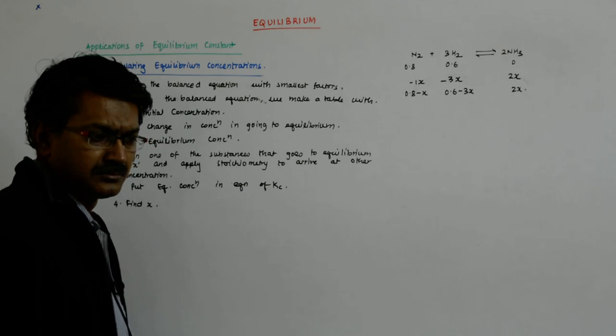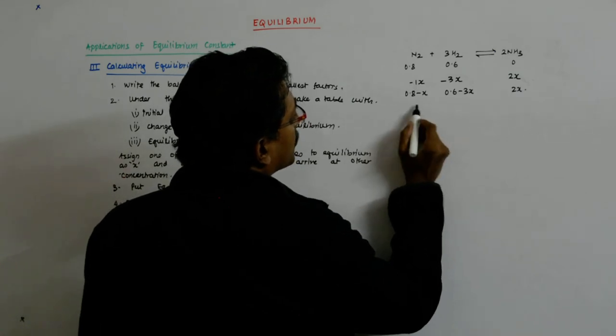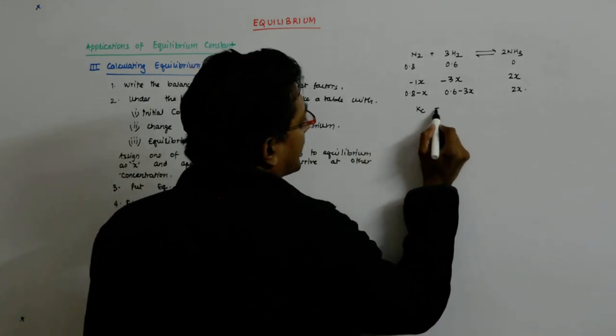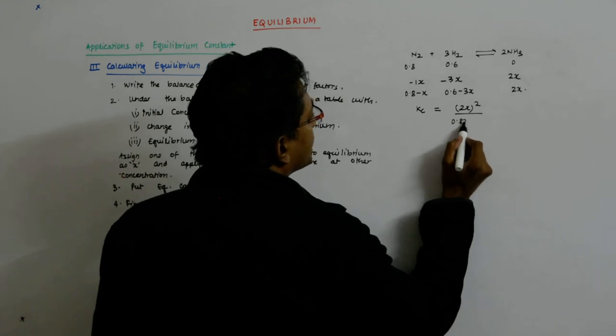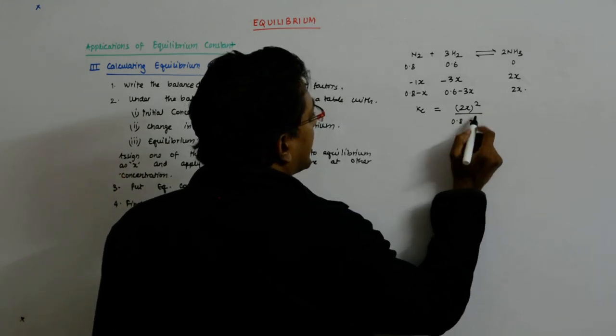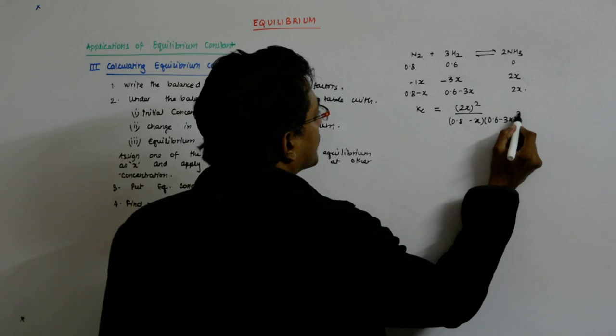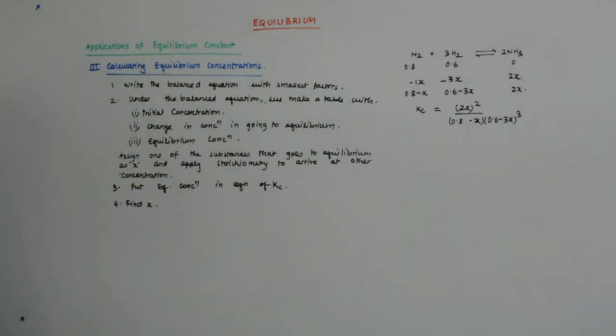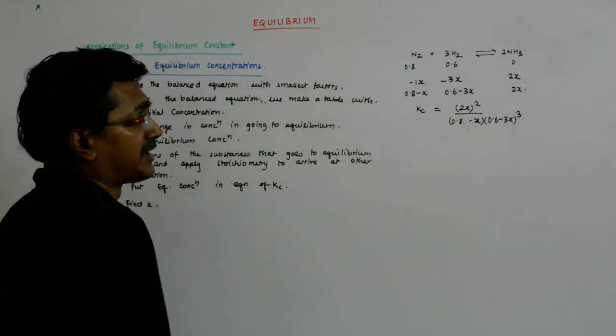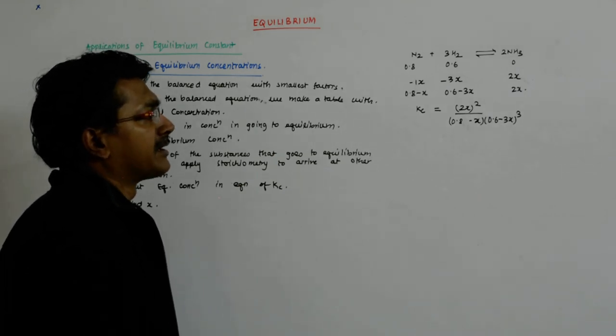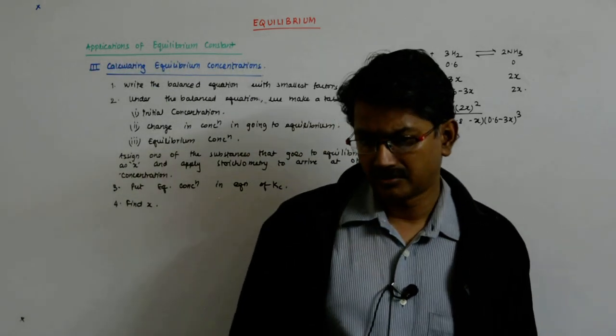And then whatever is the equilibrium concentration, so what do I do? I have the value of Kc: 2X whole square upon 0.8 minus x into 0.6 minus 3X whole cube, right? Maybe solving this equation will test a lot of your mathematical skills, but fine, this is how it is done because this becomes a degree 4 equation.